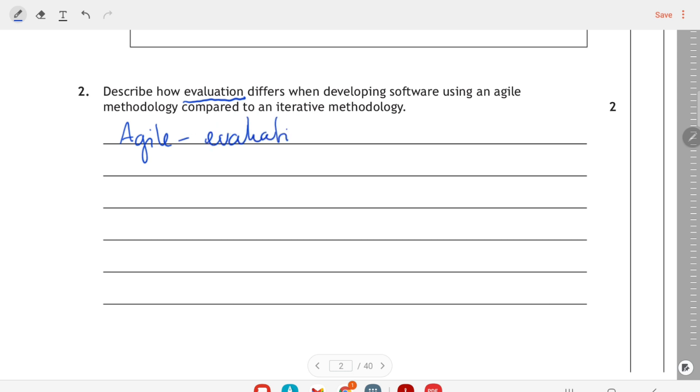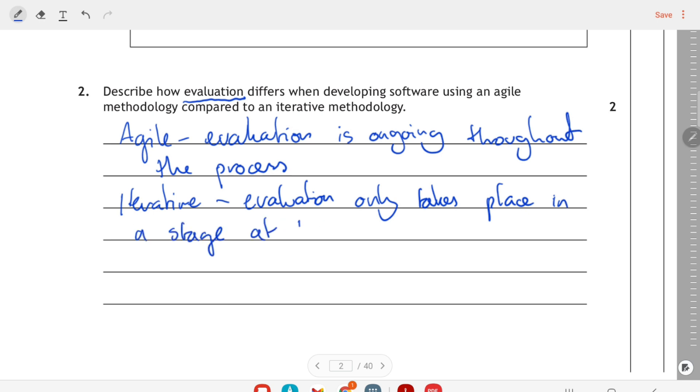So I say evaluation is ongoing throughout the process of the software development process. You're evaluating as you go. Iterative is not like that. Iterative has a separate evaluation stage. Evaluation only takes place in this discrete stage at the end, so it only takes place in one stage at the end after testing.